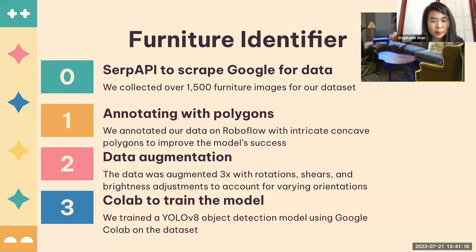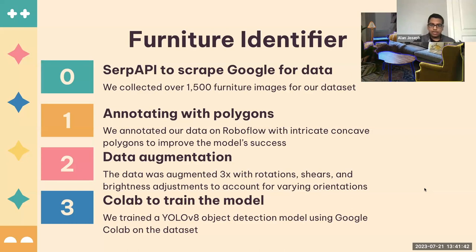For example, we augmented our data with rotations since people can turn their cameras either way, and with shear and brightness adjustments because people live in different degrees of brightness. Especially considering blind people might not usually have the lights on, so we had to compensate for darker environments. Finally, we trained a furniture detection model based on YOLO V8 in Google Colab using our dataset from RoboFlow.